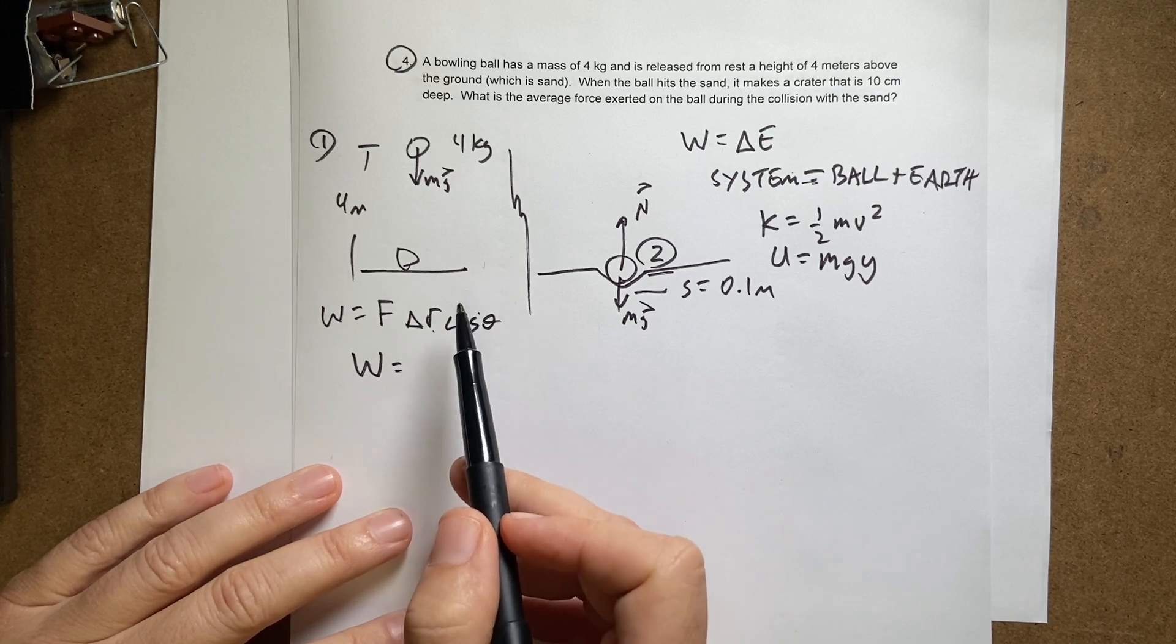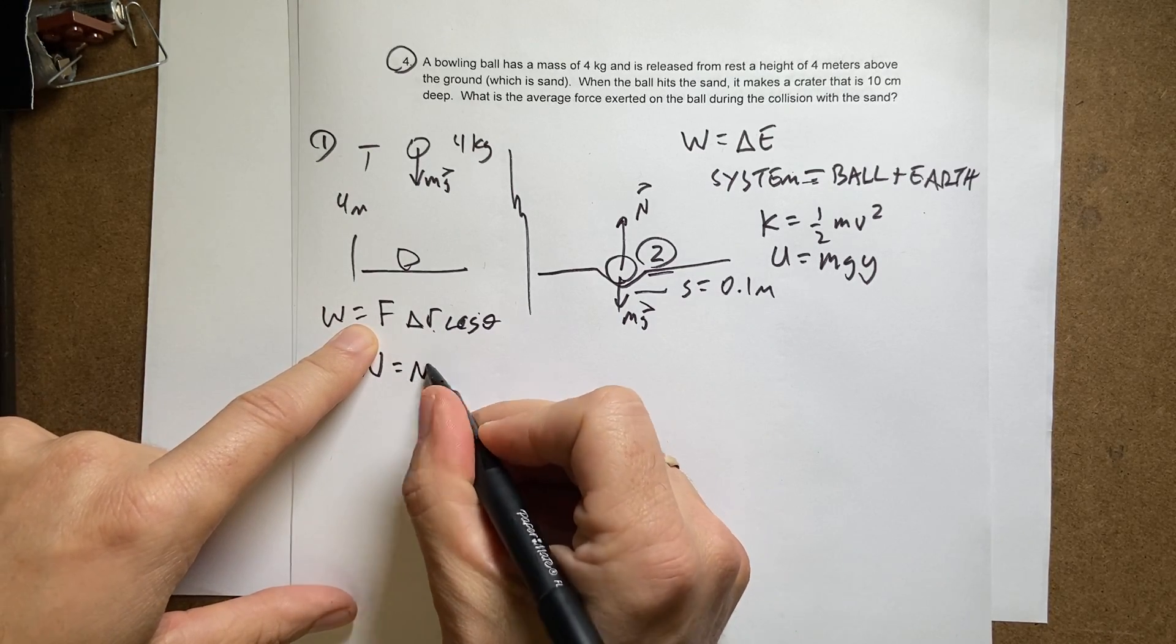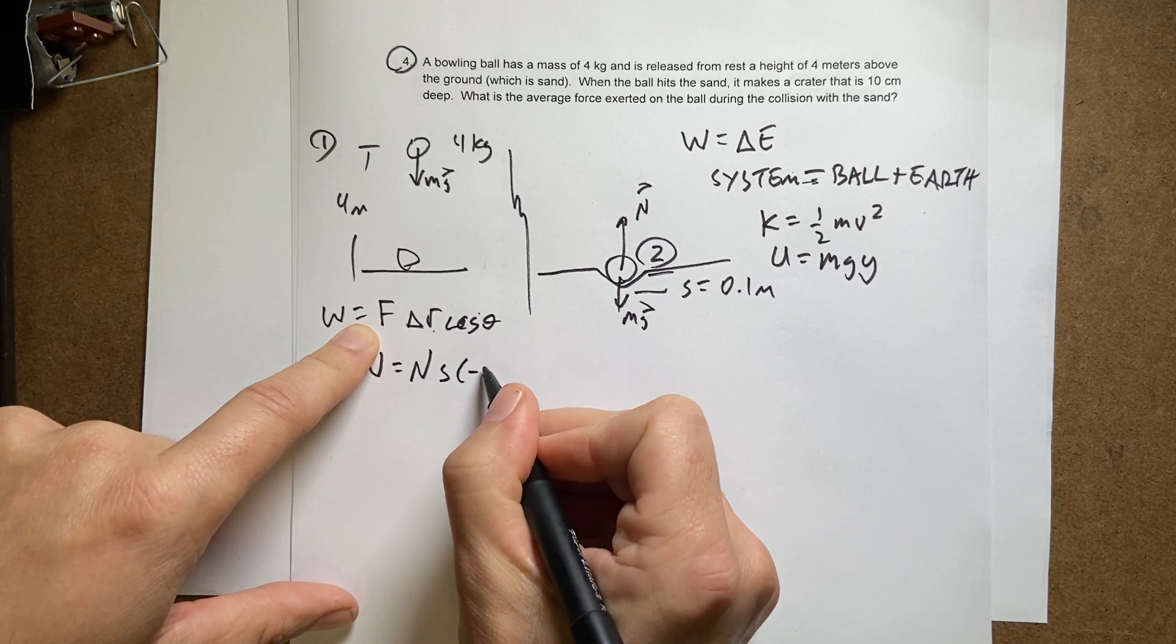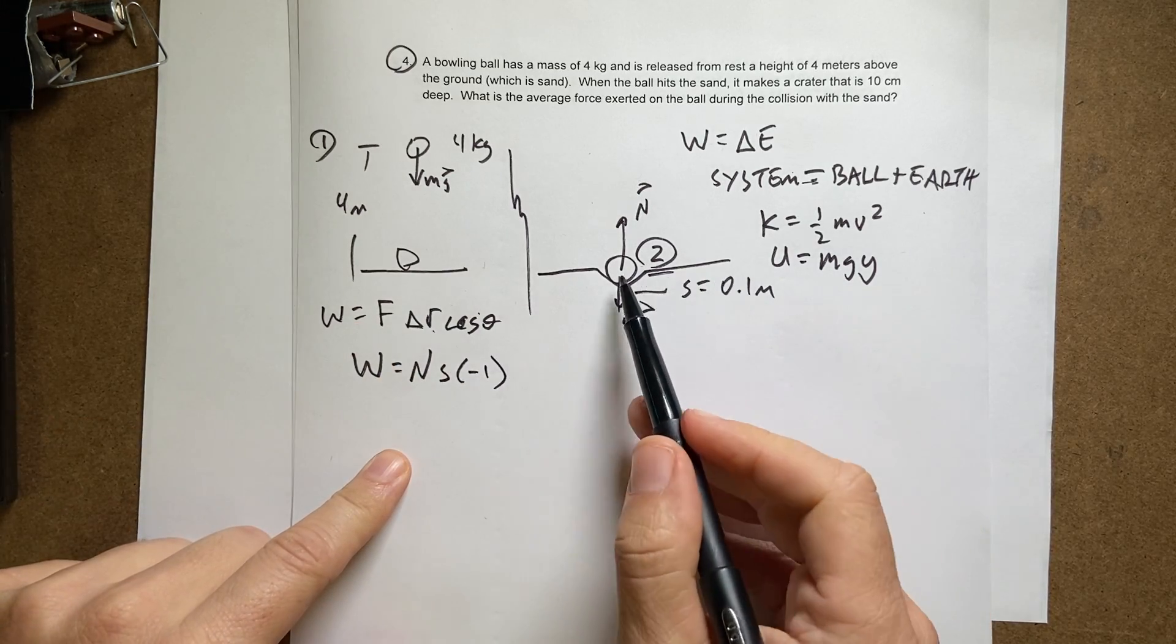So that means I'm going to get N times S minus one times minus one, where S is the amount it moves and N is the force, which I don't know. That's what I'm trying to find.